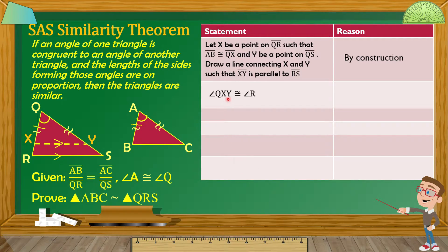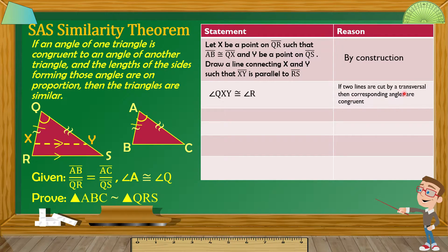Next statement: angle QXY — that is angle X here — is congruent to angle R. How do we know this? The reason is: if two lines are cut by a transversal, then corresponding angles are congruent. Since XY is parallel to RS, and the transversal cuts through them, angle X and angle R are corresponding angles and therefore congruent.